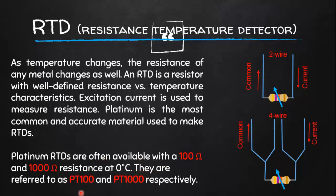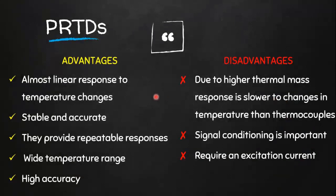Here you can see a two-wire PT100 RTD, and similarly we have a four-wire PT100. The four-wire configuration is more accurate than the two-wire. All RTDs require excitation current to measure resistance. The advantages of PRTDs include behavior that is almost linear with respect to temperature changes, and they are very stable and accurate, providing very good repeatable responses.